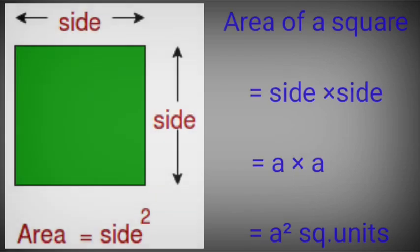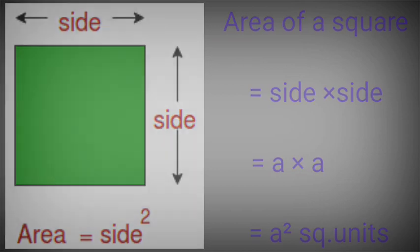Area is the region occupied by a closed shape. Let's see some examples. We measure the area of a square by multiplying its side by itself — that is, if one side is equal to a units, its area is equal to a into a, which is a squared square units.